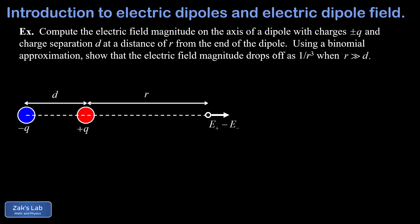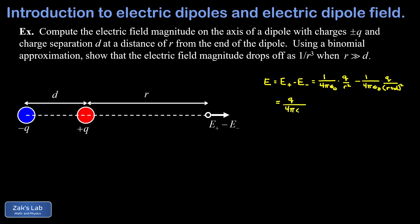We use the formula for the electric field surrounding a point charge and find the difference of the two magnitudes. E equals E plus minus E minus. Plugging in the point charge formula, we have one over four pi epsilon zero times q over r squared for the positive charge, minus one over four pi epsilon zero times q over r plus d squared for the negative charge — the minus sign was moved out front because the charge is negative, and the distance from the negative charge to the observation point is r plus d. Factoring out the constants q and one over four pi epsilon zero, we get q over four pi epsilon zero times the quantity one over r squared minus one over r plus d squared.